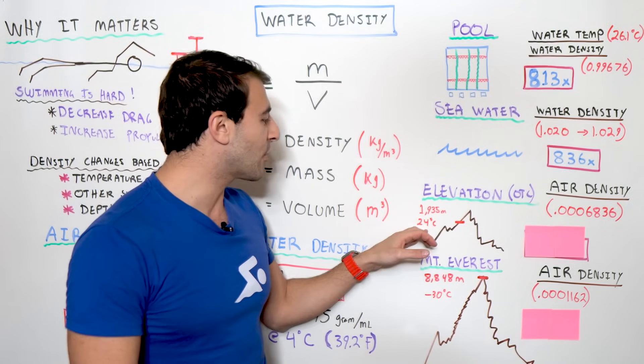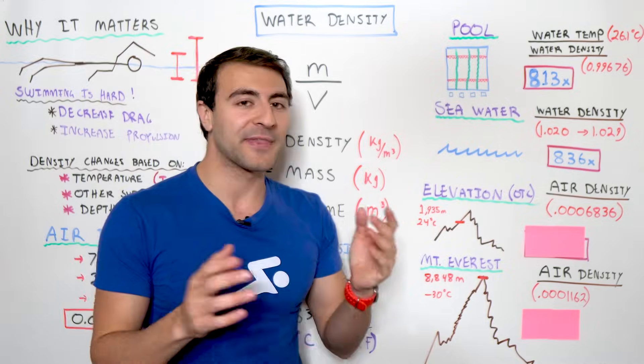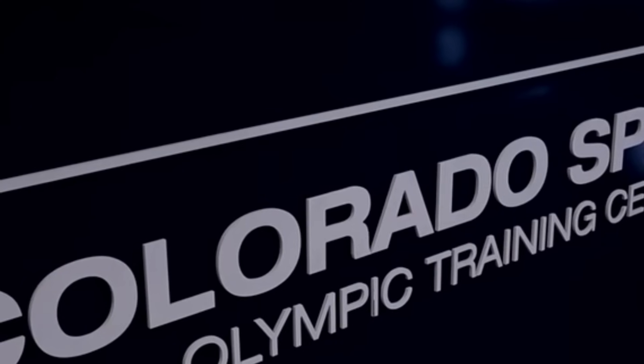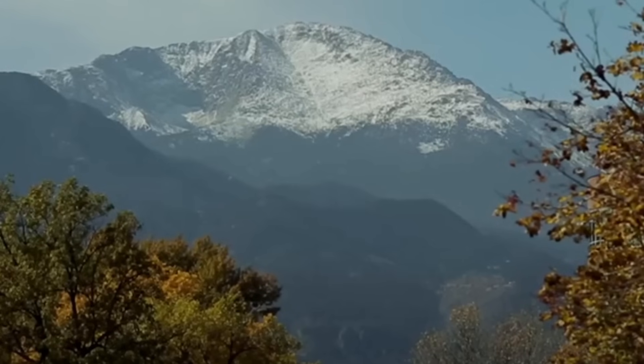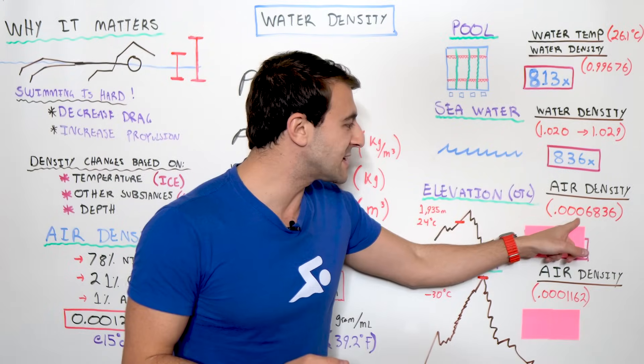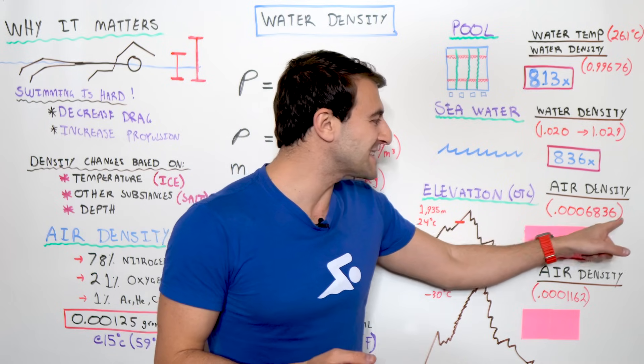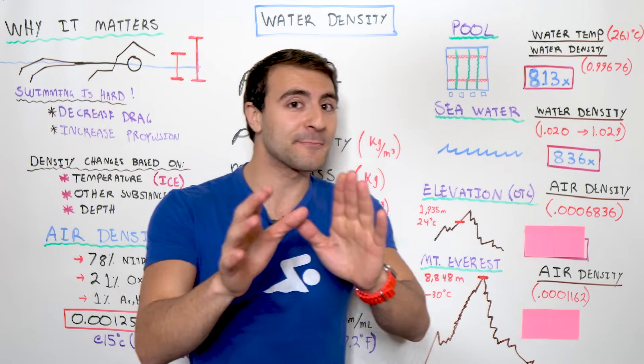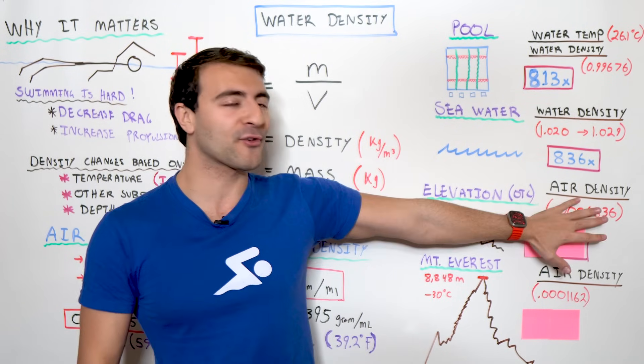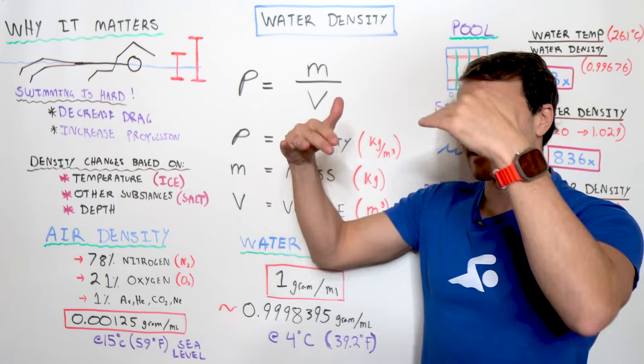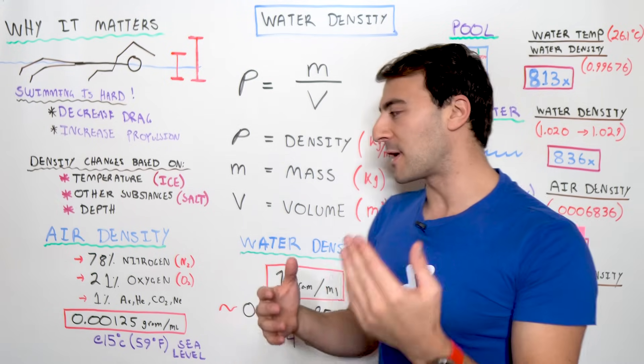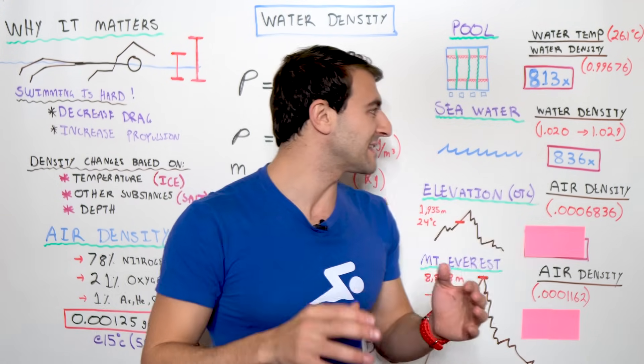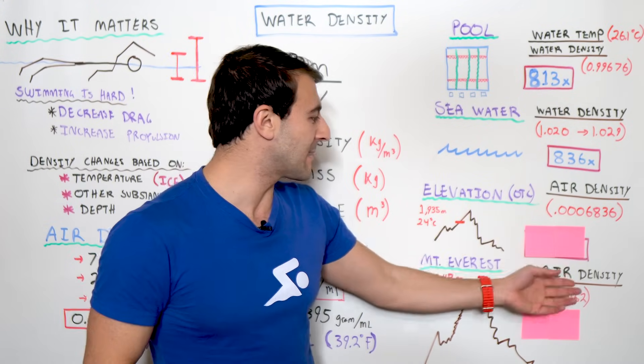We've got a beautiful facility. At that altitude, the air density is 0.0006836. Now, let's compare the air density at the Olympic Training Center compared to sea level. And if you notice, it's a lot different. It's actually about half. So, if you were to take the water density and divide it by this number,